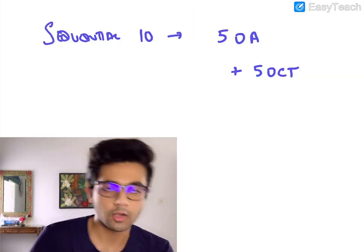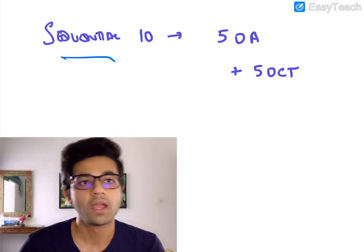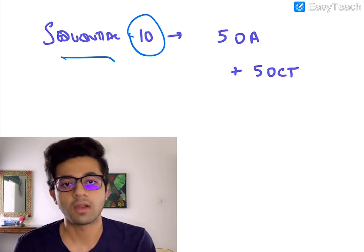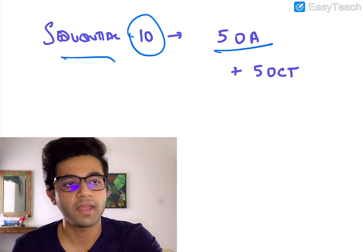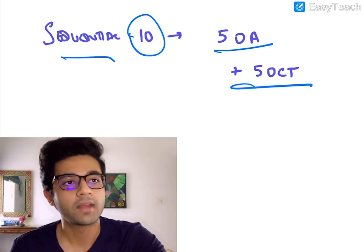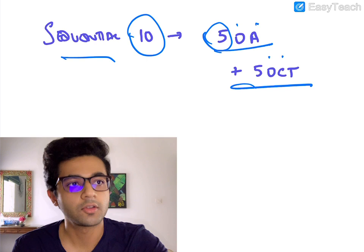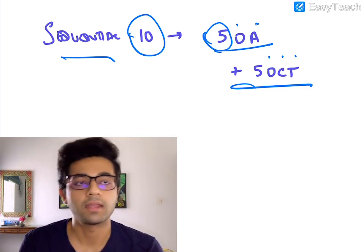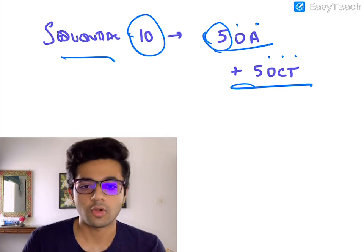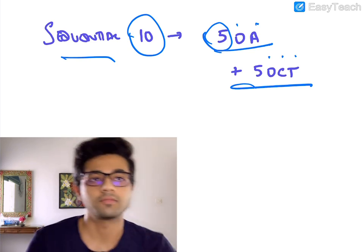Lastly, there is also something called a sequential regimen of treatment, which a lot of people use. This is again a 10-day regimen — unlike the triple and quadruple which are 14-day regimens. It goes as 5-O-A plus 5-O-C-T: 5 days of omeprazole plus amoxicillin, followed by 5 days of omeprazole plus clarithromycin plus tetracycline. This sequential regimen is gaining popularity now. That's it for this short video on the treatment regimens for H. pylori infection. Thank you.